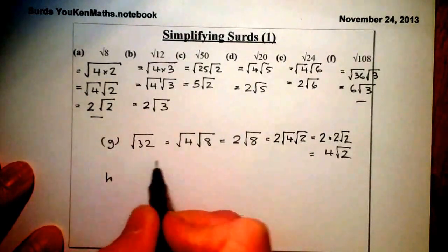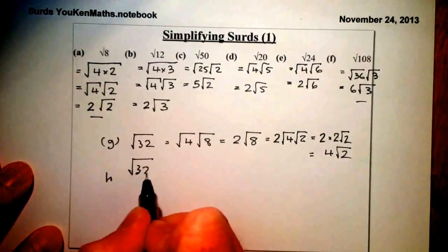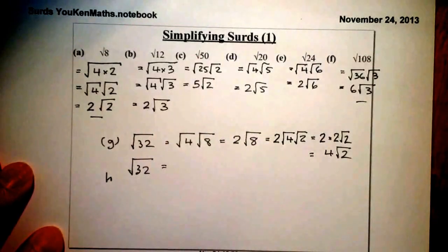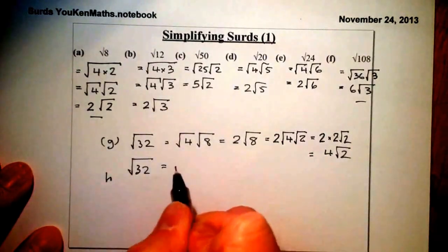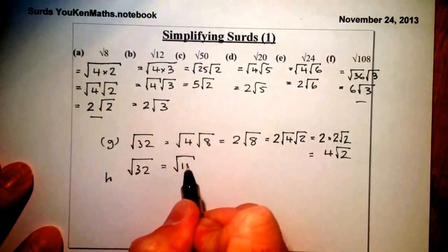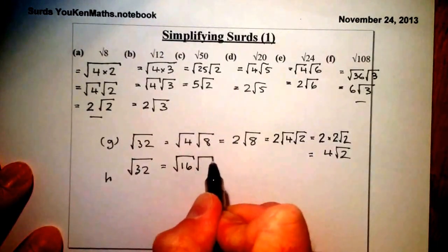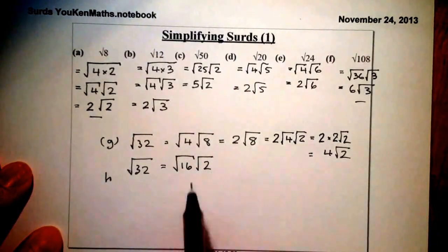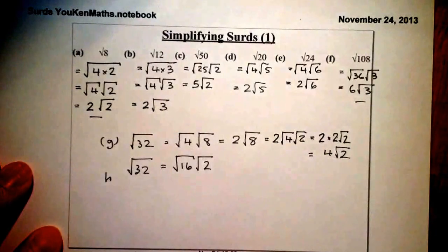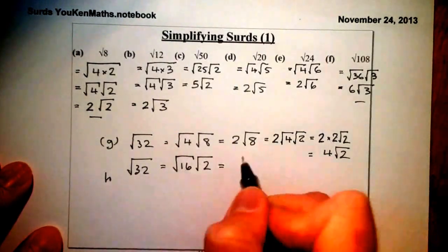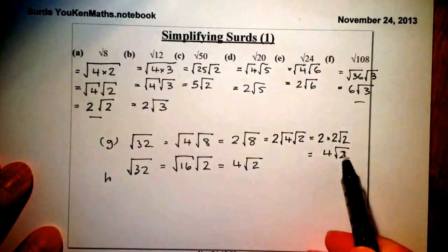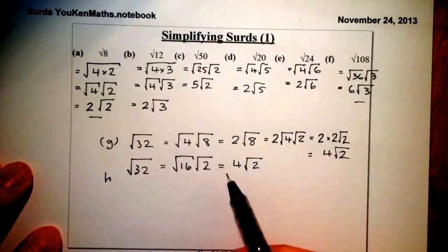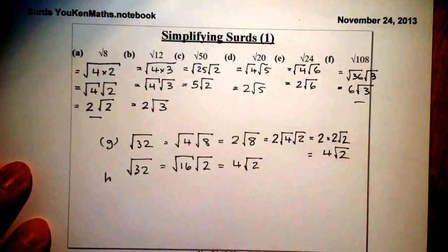The second, more efficient way: with 32, there's a larger square number I can use — 16. So I write root 16 times root 2, since 16 times 2 gives 32. The square root of 16 is 4, giving 4 root 2 directly. Same answer, one method a bit more efficient than the other, but both correct.